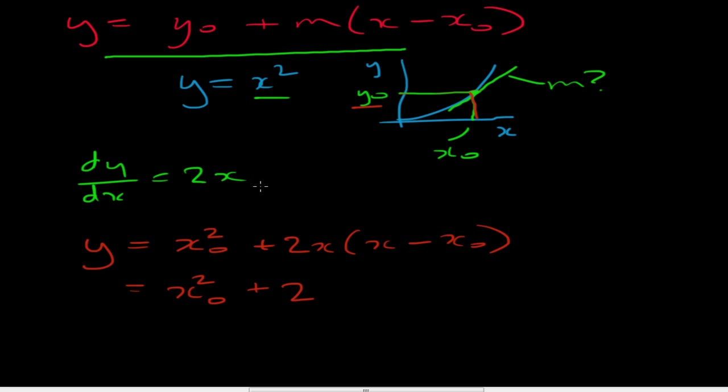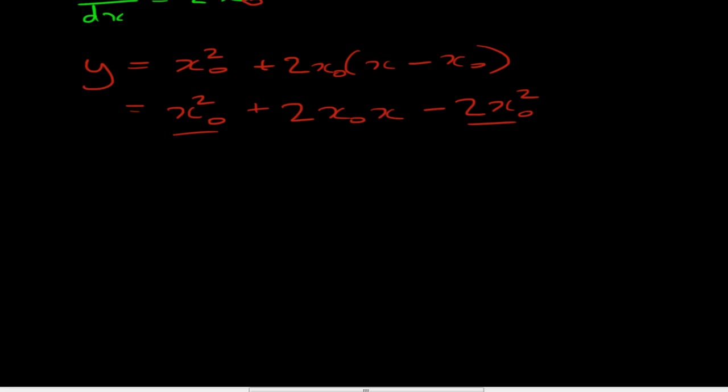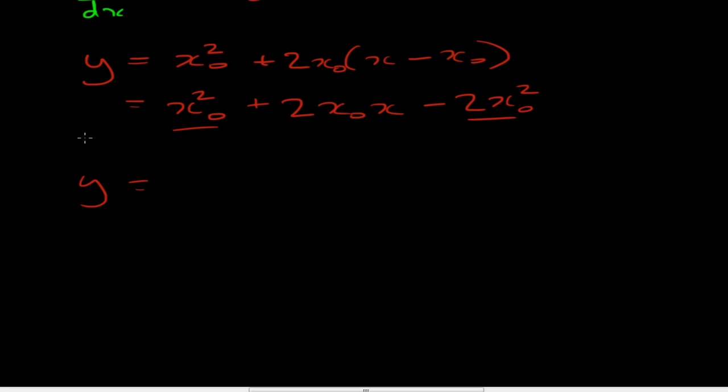One thing I should point out, the slope, of course, is at x0. So I need to put an x0 there. So that's 2x0 x minus 2x0 squared. Obviously, I've got some cancelling to do here. So I can get rid of some of those. So y equals 2x0 x minus x0 squared. So that equation describes the tangent line at x0.